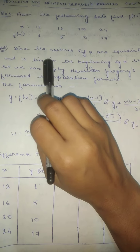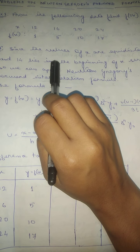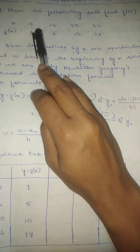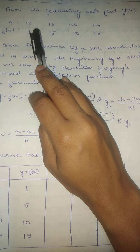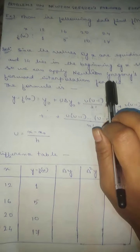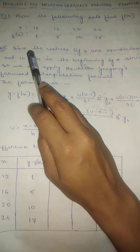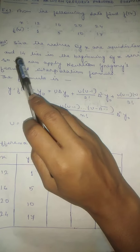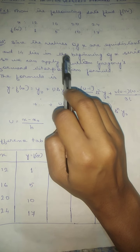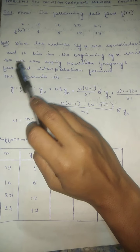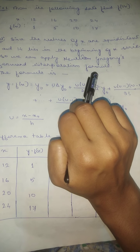The first thing to check is that our x values are equidistant and the interpolating value x=14 lies near the beginning of the x series. Since both conditions are satisfied, we can apply Newton Gregory's forward interpolation formula.